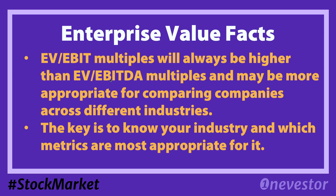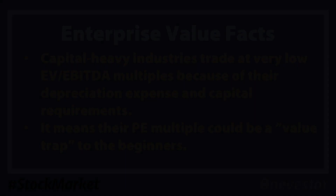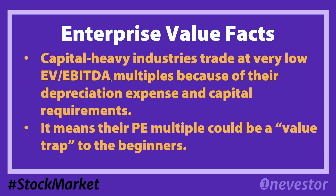EV by EBITDA multiple is used for capital-intensive industries. The reason is that these businesses have huge depreciation charges. EV by EBITDA is preferred because it adds back depreciation, which makes it a more comparable metric for capital-intensive companies.